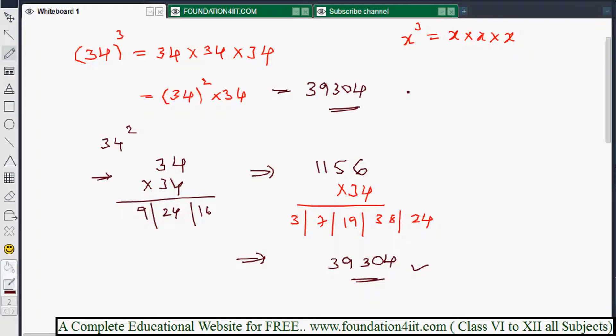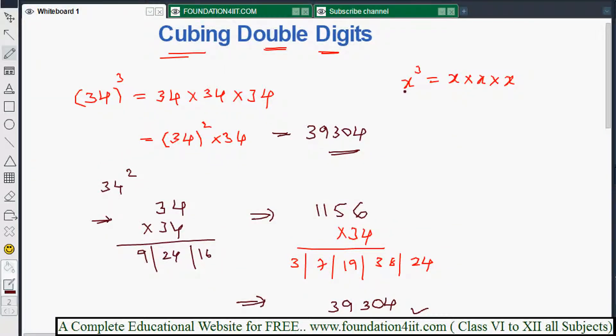This way we can do simple cubing. First we will do square of that number, then multiply by the same number. So we are multiplying the same number thrice.